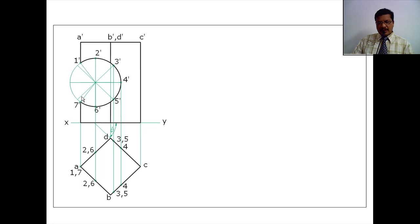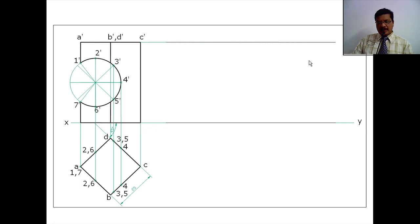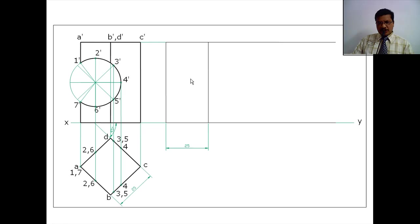After transferring all these cutting points, draw the stretch-out lines from the bottom base and from the top base. Take the length 25 and mark four divisions of 25mm along the stretch-out lines. Give the names for all the face edges: this is face edge A, B, C, D, and A.